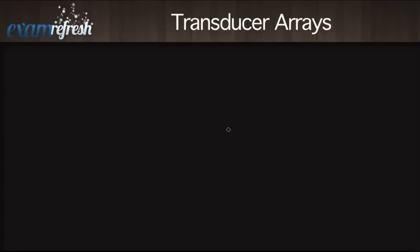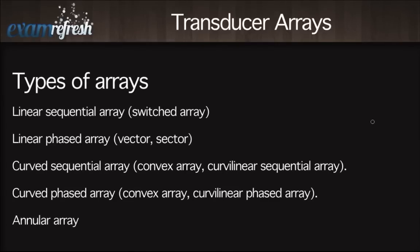Welcome to this week's lesson. We'll be speaking about transducer arrays. This can tend to be a little confusing because the names are the same and then they add one qualifier that kind of changes what the actual transducer array does. There are a few different types of arrays we'll go over today: a linear sequential array, which is a switched array; and a linear phased array, which would be a vector giving us a sector image.